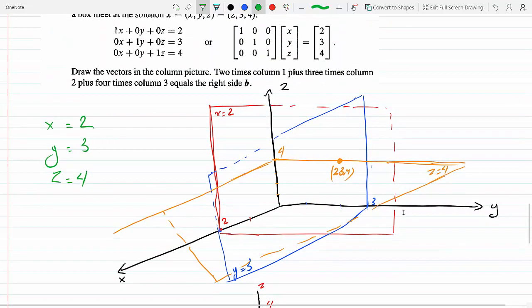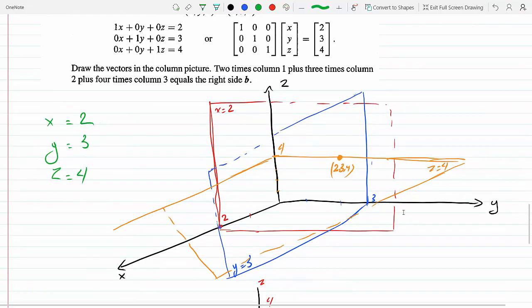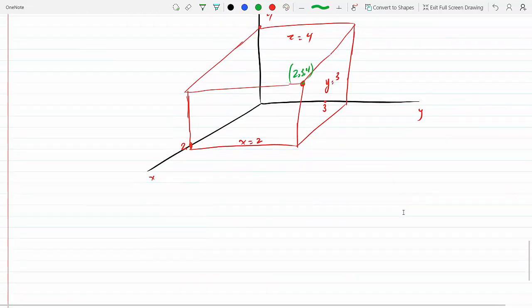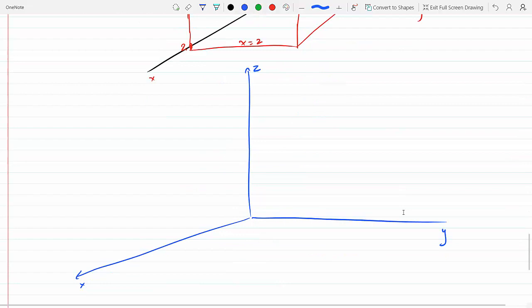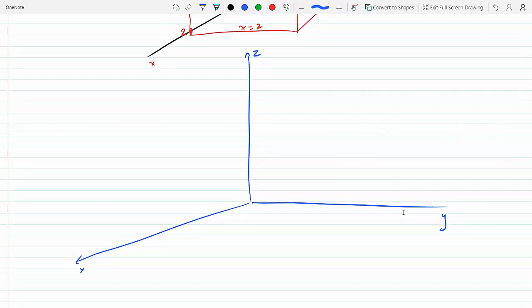Now we have to sketch the vectors in the column picture. Let's do that. For the x, y, z vector, the first column vector is [1, 0, 0]. Now we're taking the column vectors [1, 0, 0].